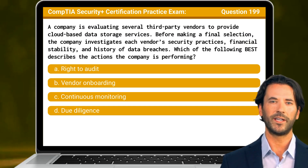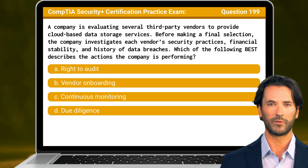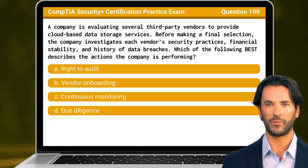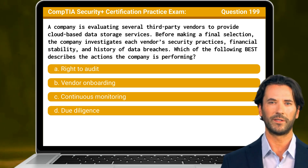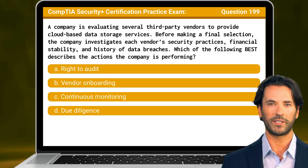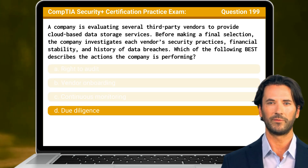Question 199. A company is evaluating several third-party vendors to provide cloud-based data storage services. Before making a final selection, the company investigates each vendor's security practices, financial stability, and history of data breaches. Which of the following best describes the actions the company is performing? The answer is D. Due diligence.